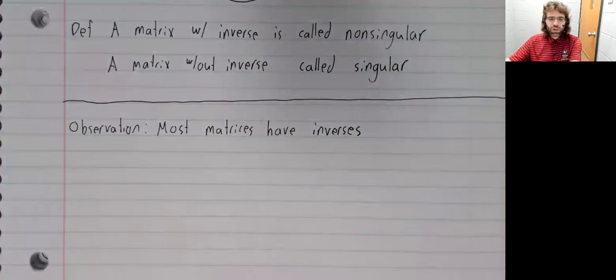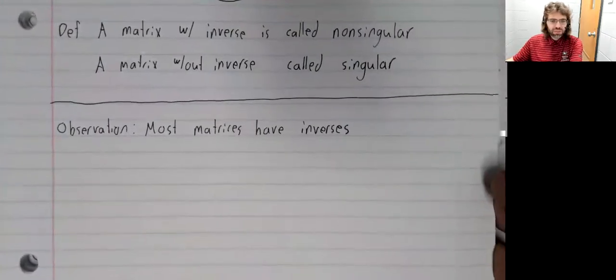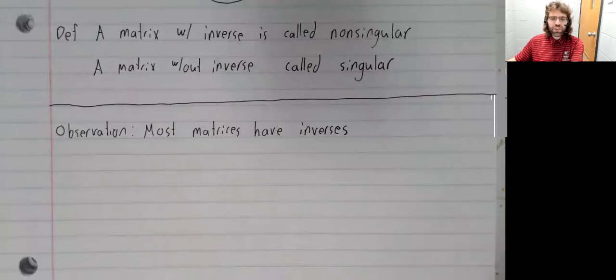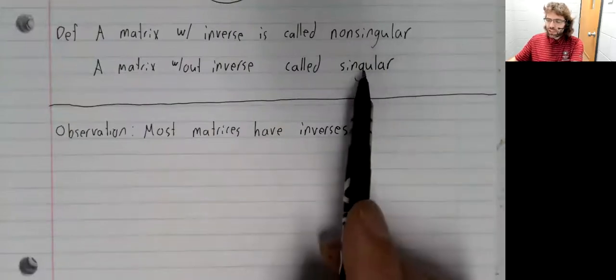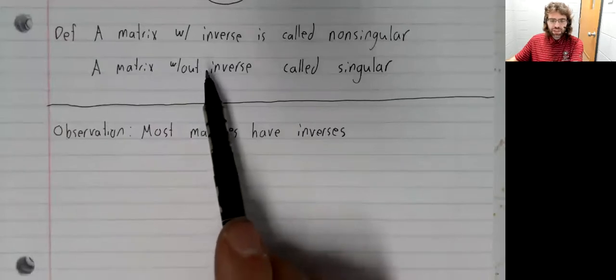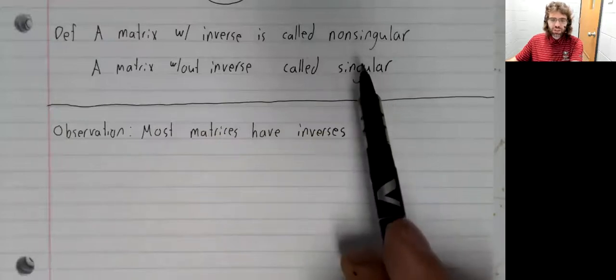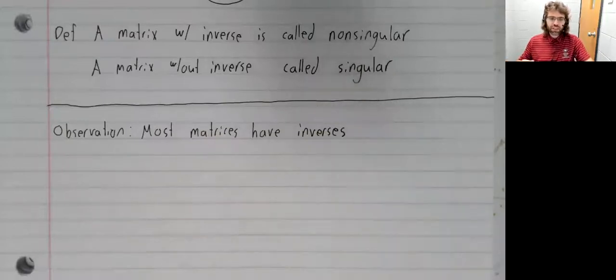We're not going to quantify exactly what we mean by most, but that's why we have these names. A singular event is a very rare event. So it's very rare for a matrix to not have an inverse—hence, singular and nonsingular.